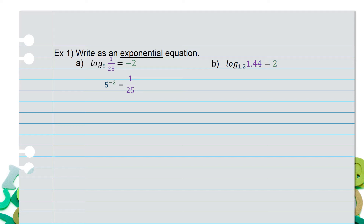For part b, we have log base 1.2 of 1.44 equals 2. Can you rewrite that as an exponent? It would simply be 1.2 squared equals 1.44.